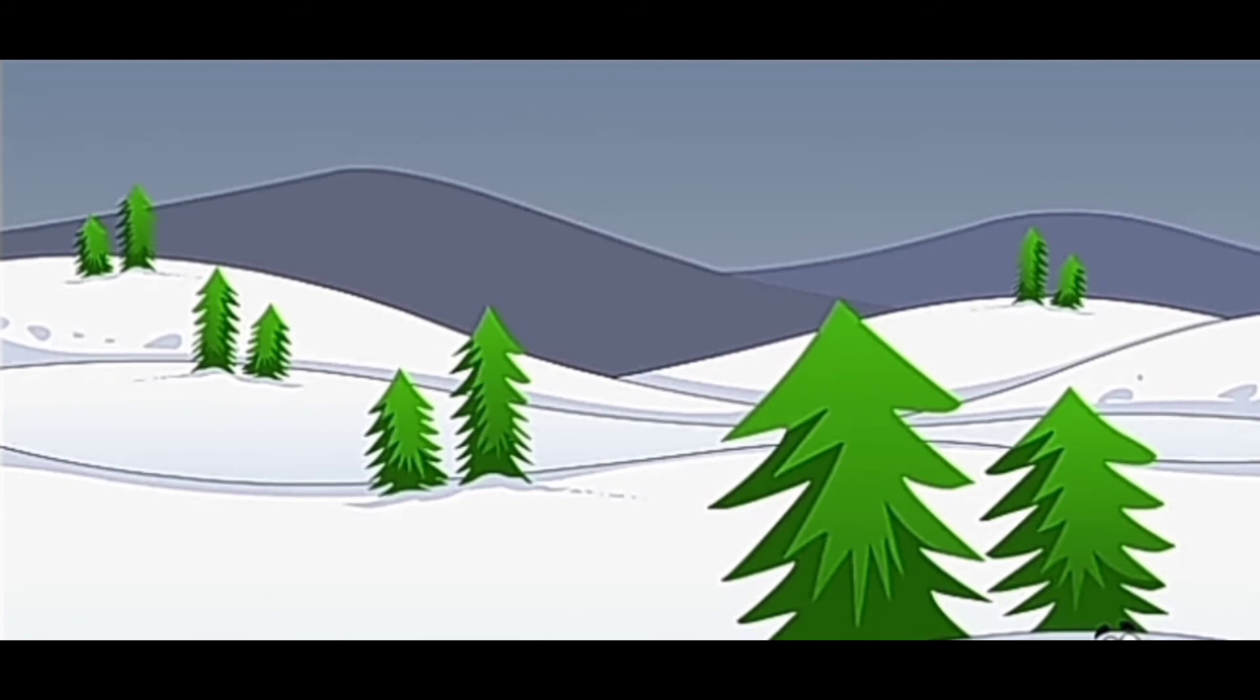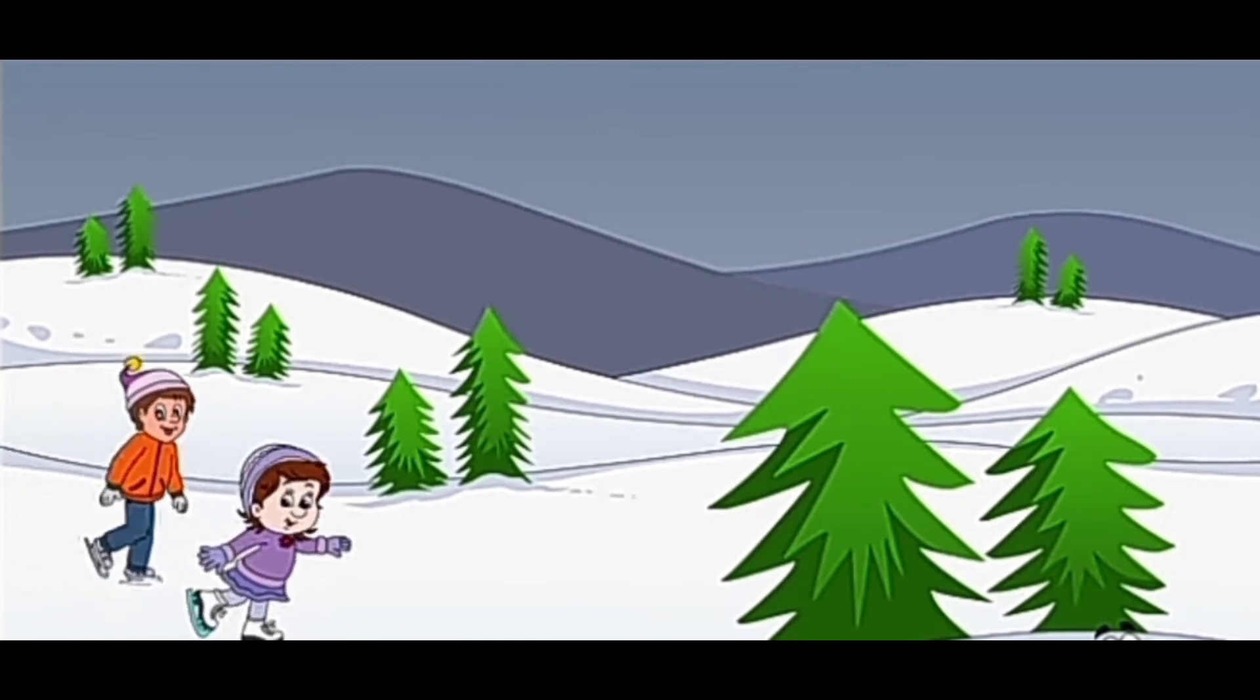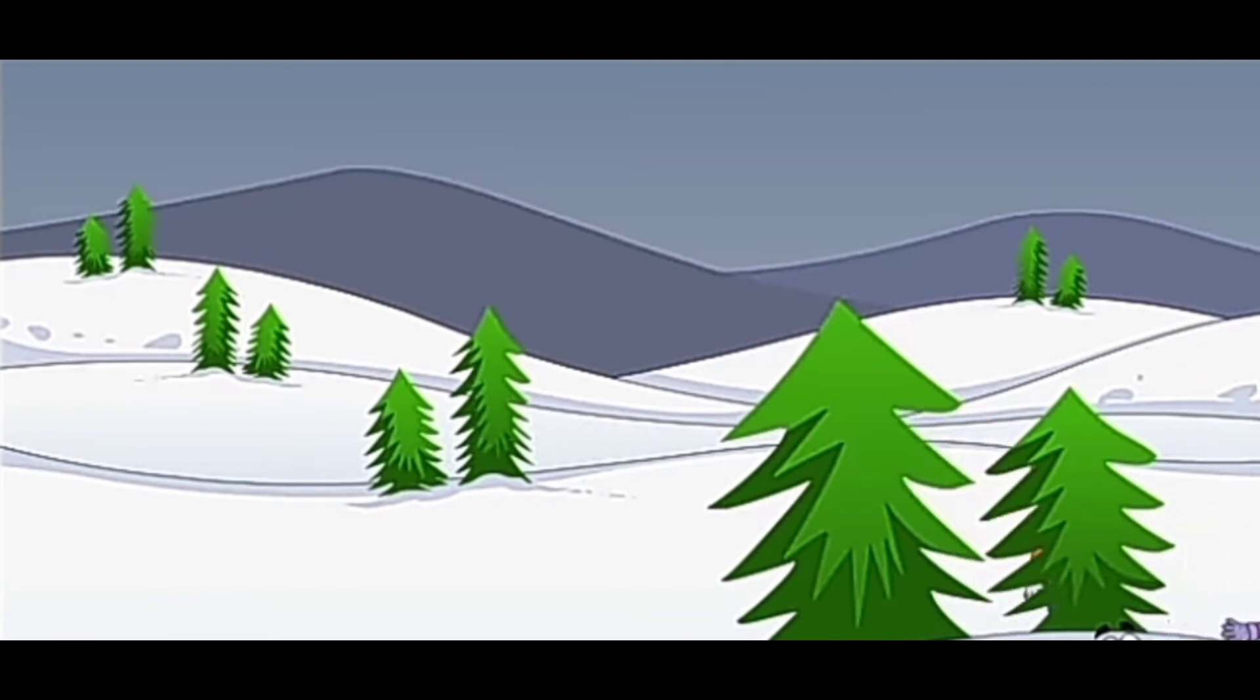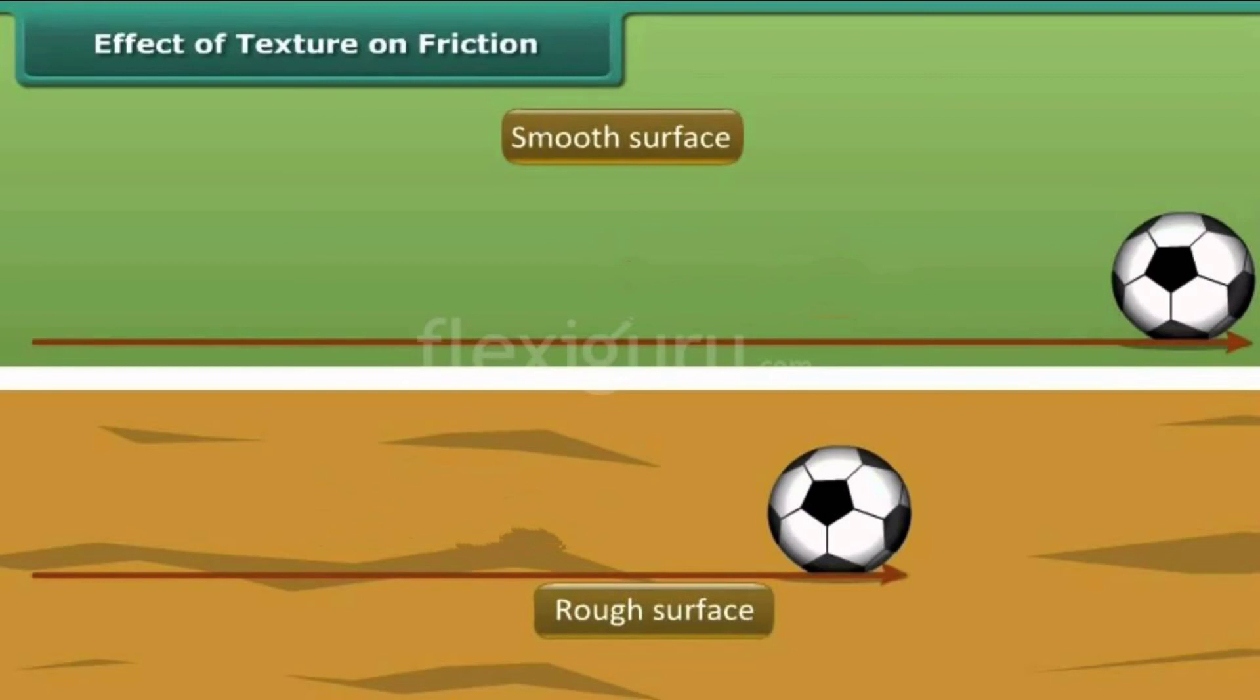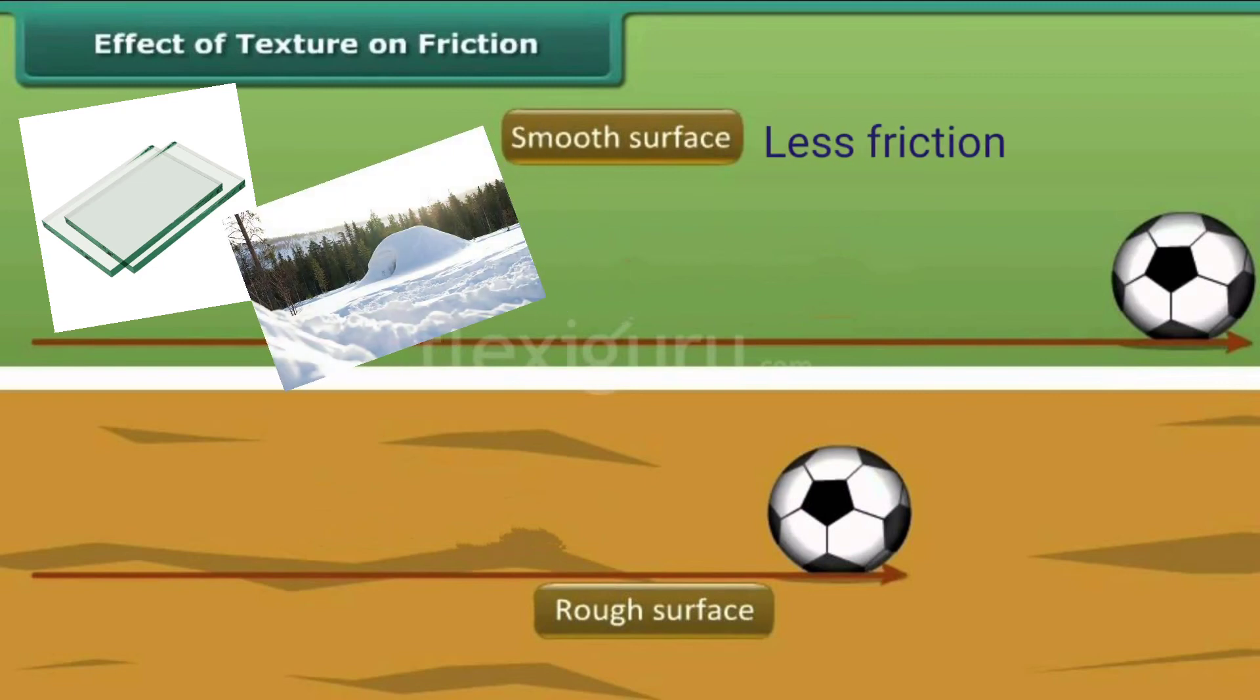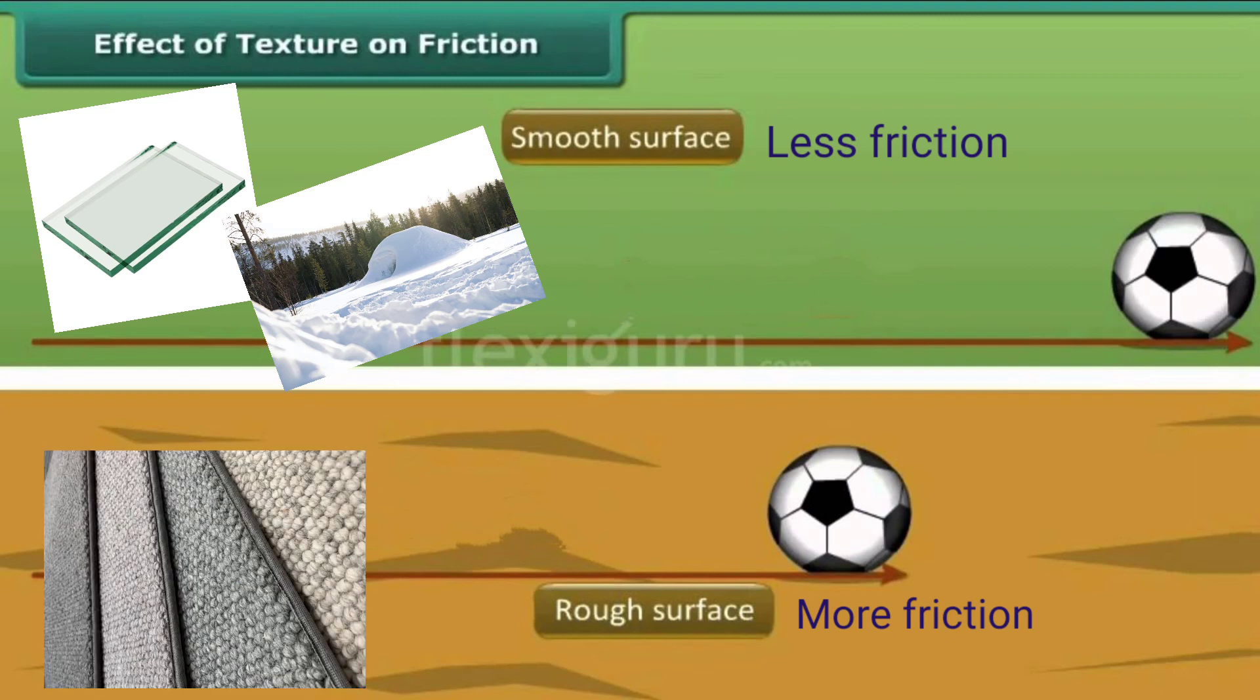Some people are skating on the ice. How are they able to glide so smoothly on the ice? It's because there is very little friction on ice. In general, materials with smooth surface, for example, glass or ice, cause less friction than materials with a rough surface, for example, carpet.